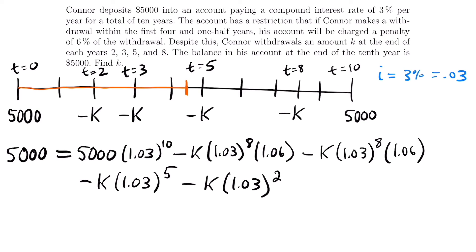Now we've got it all set up — and that was the hardest part: figuring out what to do with the penalty. The natural instinct might be to multiply by 0.06, or wonder whether to apply it eight times, but think of it simply as something you add on to the withdrawal just once, using a factor of 1.06. You don't do it more than once per withdrawal.